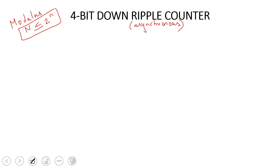For a 4-bit counter we have 4 flip-flops, so the number of states is 2 power 4, which is 16. So there are 16 states total in the counter. That is why we also call this counter a mod 16 counter — it counts 16 states.